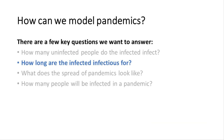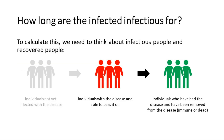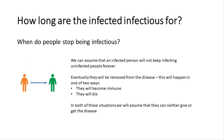This brings us to the second question: how long are our infected people infectious for? The second piece of information we want to plug into our model is how long the infected are infectious. That is, when you've got the disease and are able to pass it on, how long are you actually able to do so? We can assume an infected person isn't going to keep infecting people forever — eventually they'll be removed from the disease.